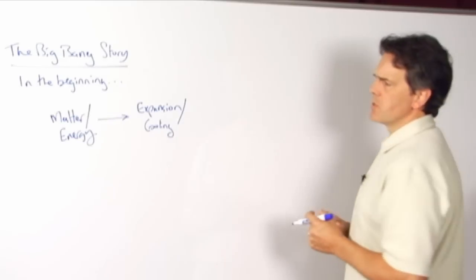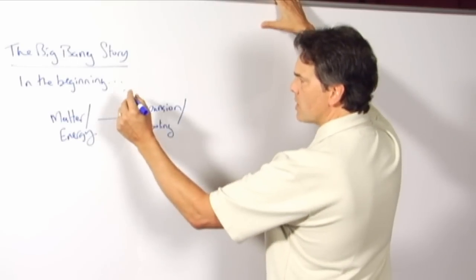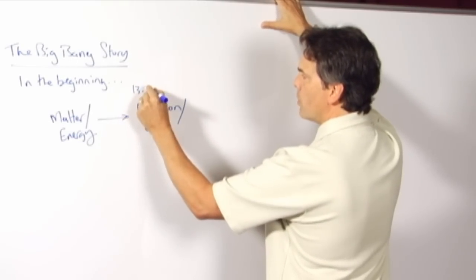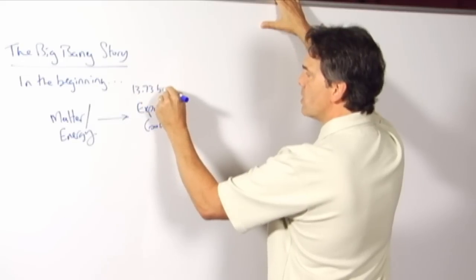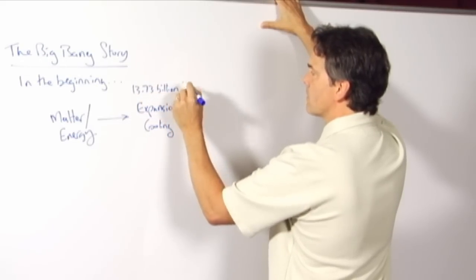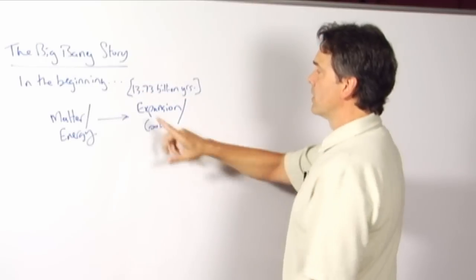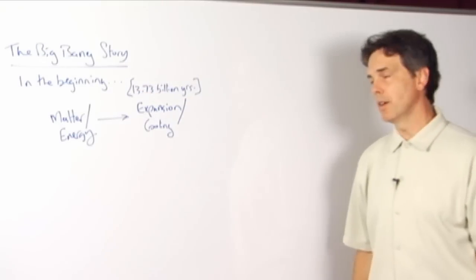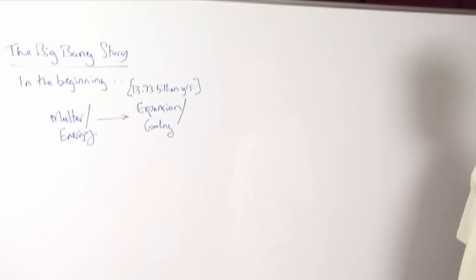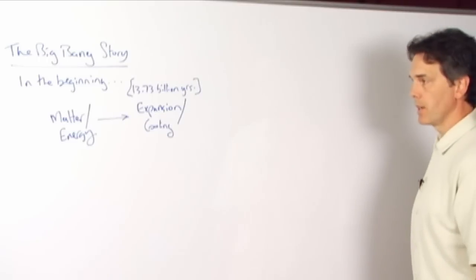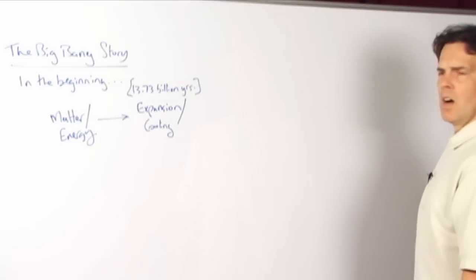Now, when did this happen? Estimates vary, but the latest number is somewhere around 13.73 billion years ago. And that number continues to be tweaked as the theory is worked out, the equations are modified in various ways, and so forth.